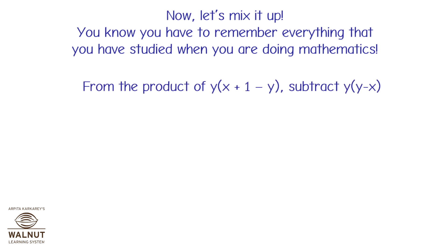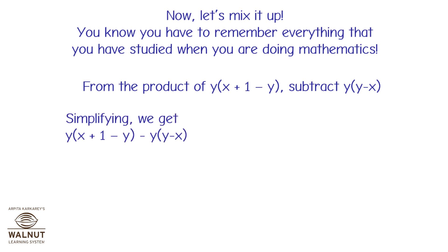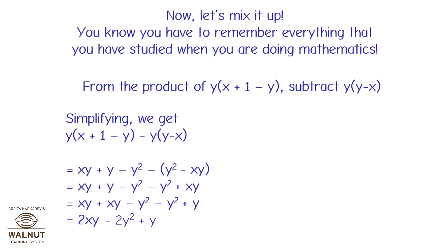From the product of y multiplied by (x plus 1 minus y) subtract y multiplied by (y minus x). Simplifying: y(x plus 1 minus y) minus y(y minus x) equals xy plus y minus y squared minus y squared plus xy, which is equal to xy plus xy minus y squared minus y squared plus y, which is equal to 2xy minus 2y squared plus y.